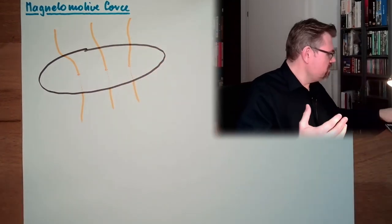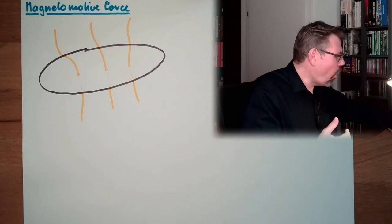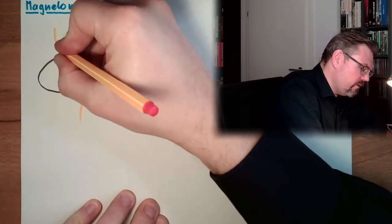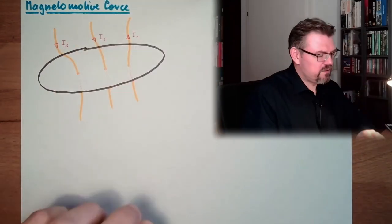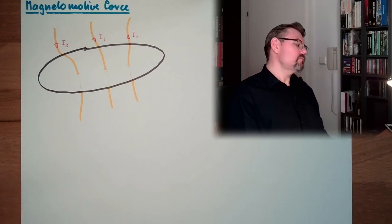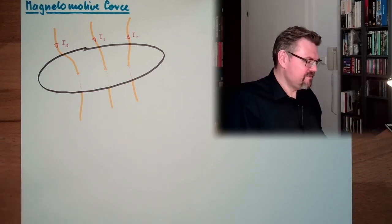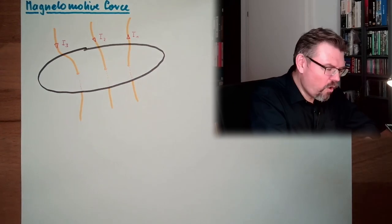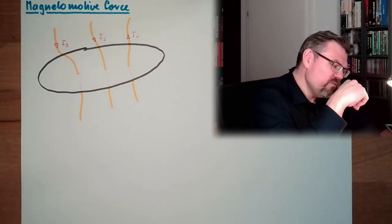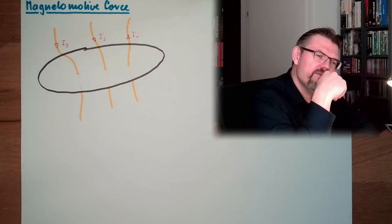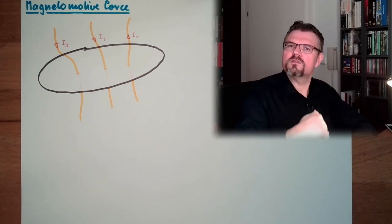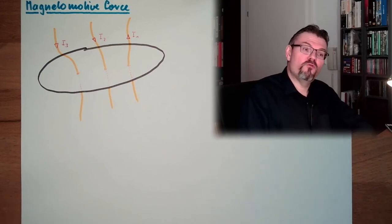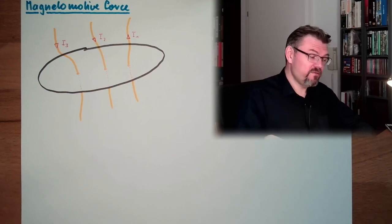Those current paths somehow own their own current. Let's say here is i1, here is i2, here is i3. The thing I have to do is summarize all currents which are passing through the surface in a certain direction. Every current passing from back to the front of the surface, I'm counting positive. Every current passing from the front to the back, I'm counting negative.